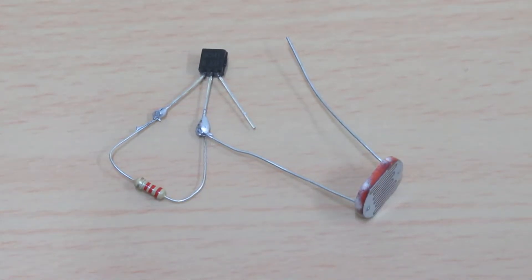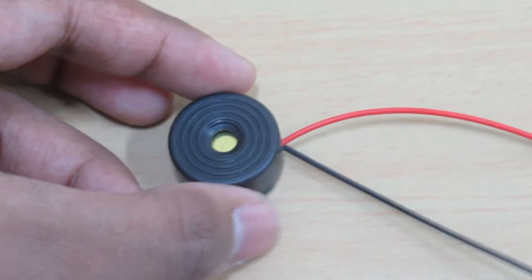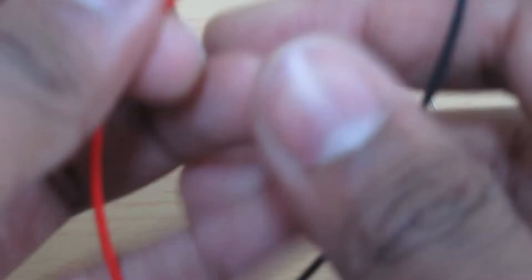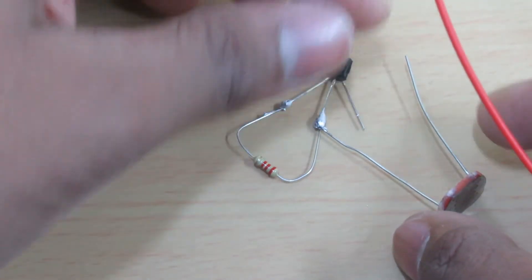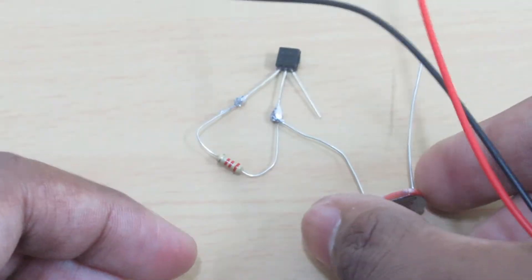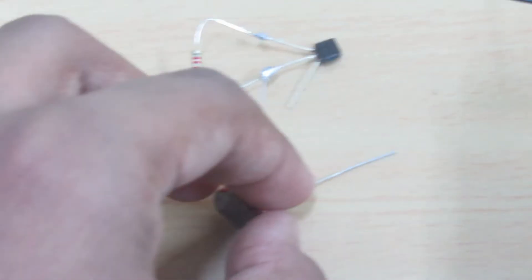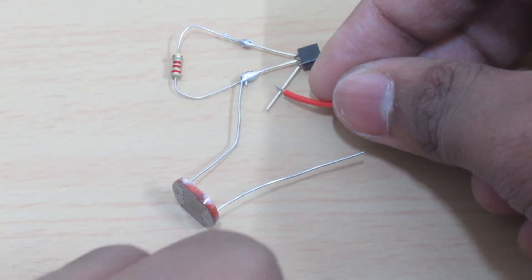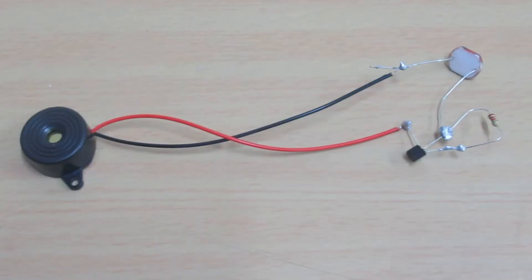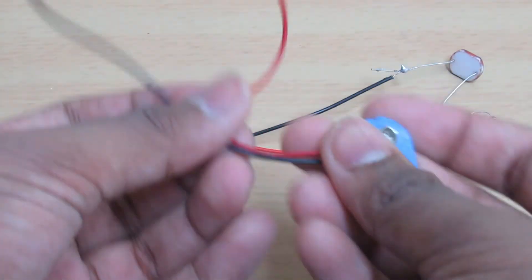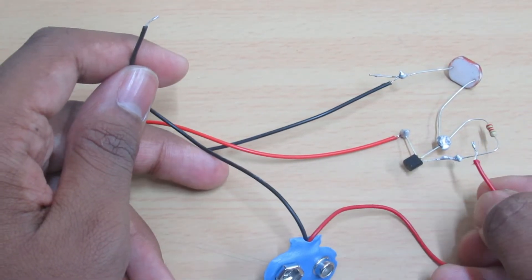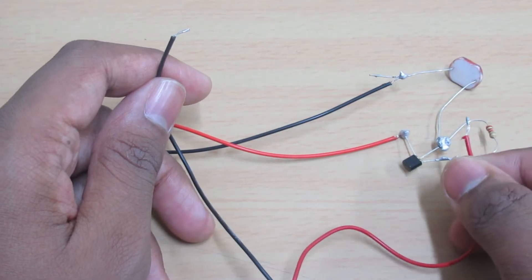The next step is to take your buzzer and connect the positive wire to the collector of the transistor and the negative wire to the LDR.